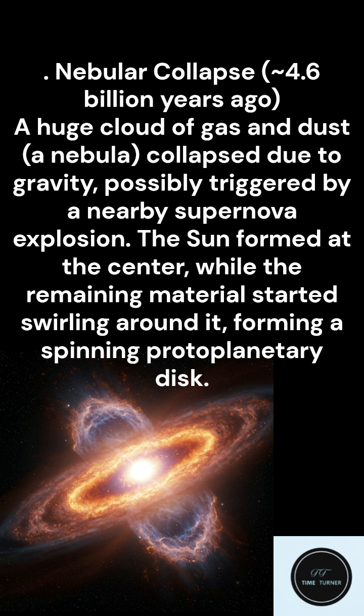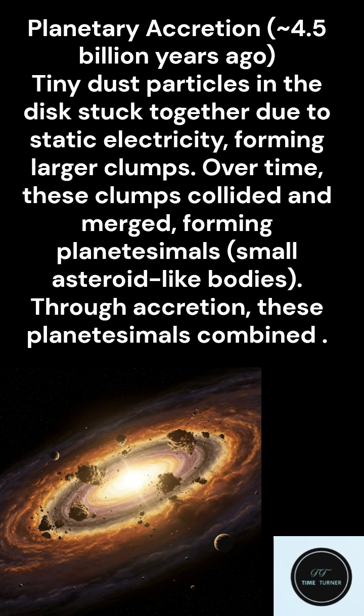So this cloud is collapsing — what happens next? As it shrinks, it spins faster and faster, like a figure skater pulling in their arms. Most of the material ends up clumped right in the center, forming our sun. The leftover material flattens out into a spinning disk around the young sun, and this disk is where Earth and all the other planets in our solar system came from.